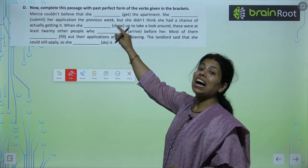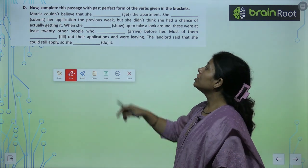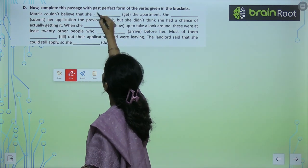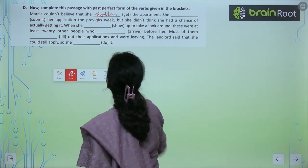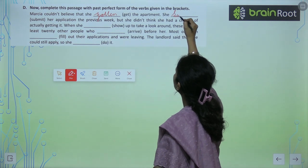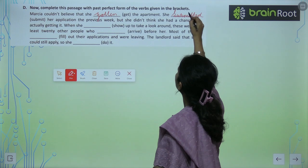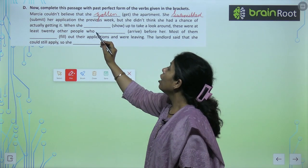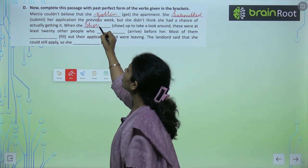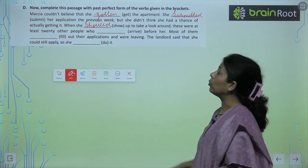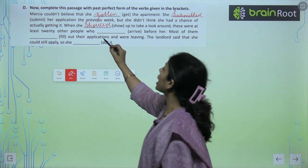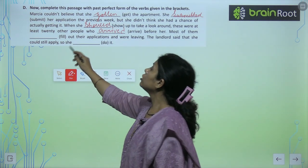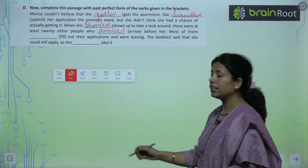Now complete this passage with the past perfect form of the verb given in the bracket. Marcia couldn't believe that she had gotten the apartment. She had submitted her application the previous week but didn't think she had a chance. When she showed up, there were at least 20 other people who had arrived before her. Most of them had failed, and so she had done it.